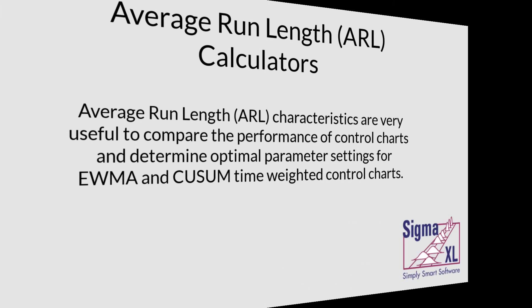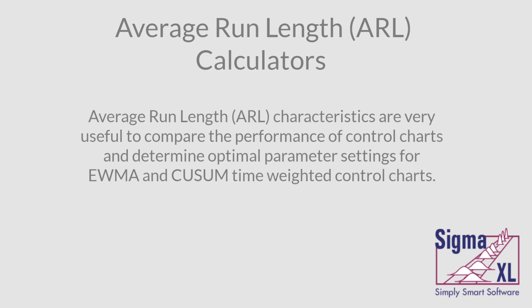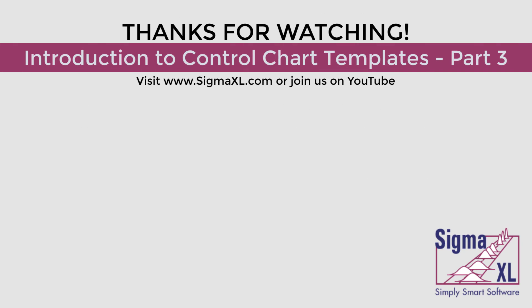In conclusion, you can use either EWMA or CUSUM to improve the sensitivity of the control chart to detect small shifts in the process mean while maintaining a low false alarm rate. EWMA has a slight advantage in that it is more robust to non-normality than CUSUM, but the choice is often a personal preference made by the practitioner. This concludes Part 3 of the Introduction to Control Chart Templates video series. For more videos, visit us at www.SigmaXL.com or join us on YouTube. Thank you for watching.